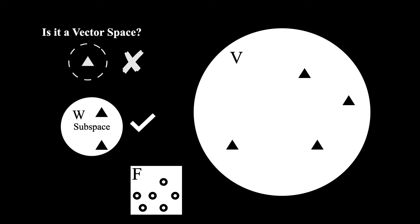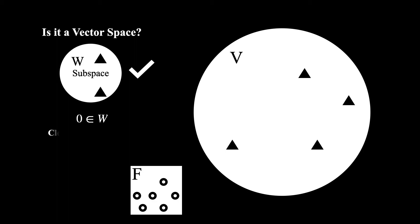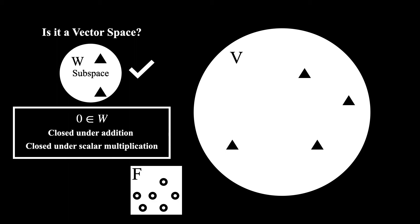It turns out there's a very useful theorem that says you only need to check three conditions to determine if a subset is a subspace. The zero vector needs to be in the set, it must be closed under addition, and it must be closed under scalar multiplication. If these three things are satisfied, then the structure has been preserved, and the subset is indeed a subspace.